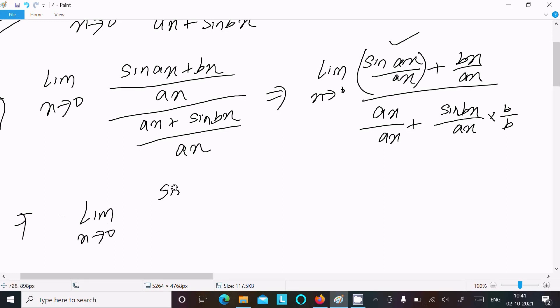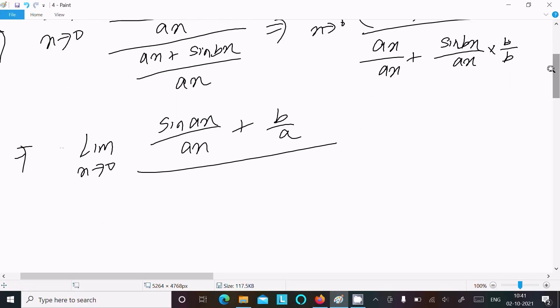We get sin(ax)/ax in one term, and after the x's cancel in bx/ax, we get b/a. For the denominator, we have sin(bx)...